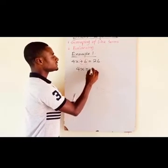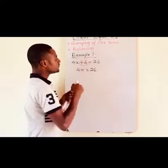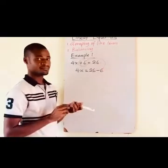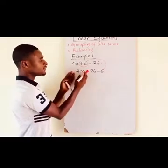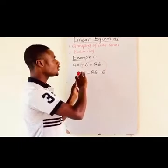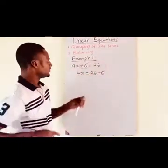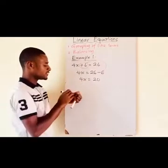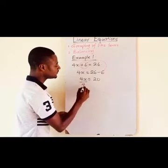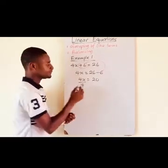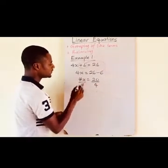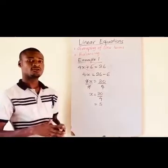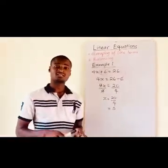At the right hand side we will have 26, and because positive 6 has moved across the equal sign it becomes negative 6. So we will have 4x is equal to 26 minus 6, which is 20. Because we are looking for the value of x, we divide through by the coefficient of x. 4 cancels 4, and x is equal to 20 divided by 4, which gives us 5.